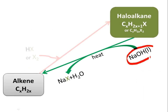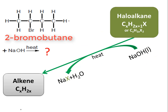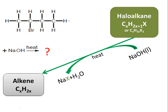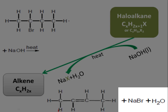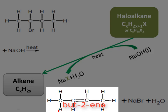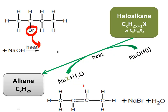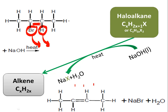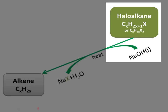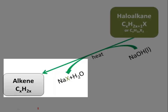A haloalkane reacts with concentrated sodium hydroxide to form an alkene, sodium halide, and water. For example, 2-bromobutane with NaOH heated gives but-2-ene as the major product, plus sodium bromide and water. The major product forms such that the double bond is more central — bromine and a hydrogen are eliminated to form the internal double bond.